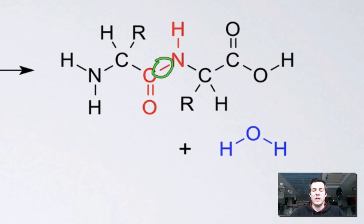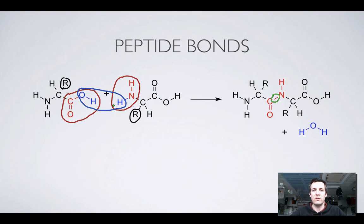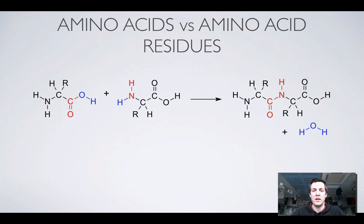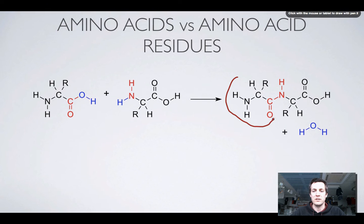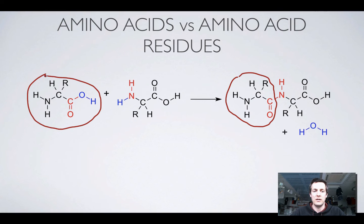In joining amino acids together, we are giving rise to the primary structure of a protein, because the primary structure of a protein is the order in which these amino acids are arranged. Now, strictly speaking, once you've made the chain, these things are no longer amino acids — they're amino acid residues. So the things that we make the chain out of are called amino acids, but we can see the remains of them in the chain. Here is the residue of the amino acid on the left — that's this one here. And here is the residue of the amino acid on the right.